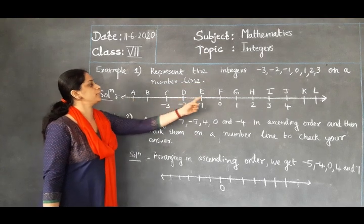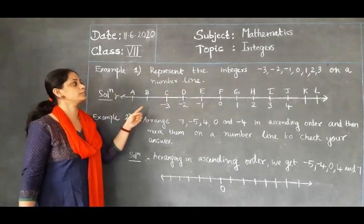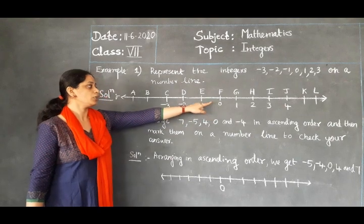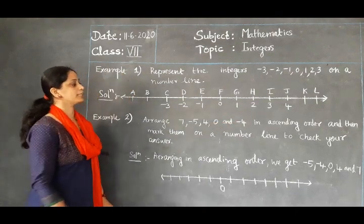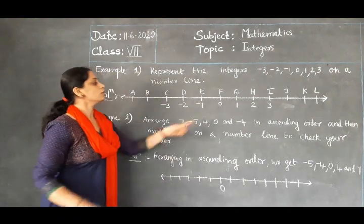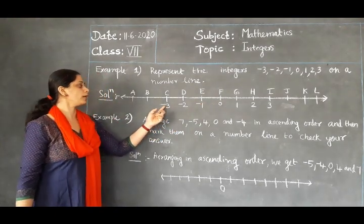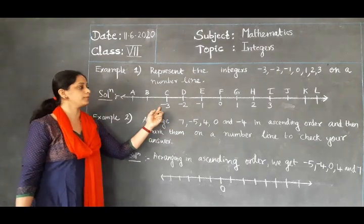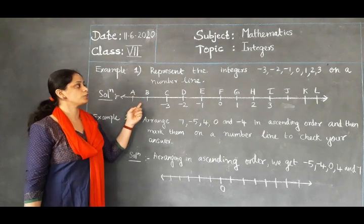I have marked points A, B, C, D up to L on the number line. The question is to represent minus 3, minus 2, minus 1, 0, 1, 2, and 3. Let us take F as 0. From 0, we start marking the numbers: 1, 2, 3 as positive numbers to the right. To the left of 0, you have minus 1, minus 2, minus 3. Starting from 0, going right: 1, 2, 3; going left: minus 1, minus 2, minus 3. That is the answer for this representation of integers on a number line.